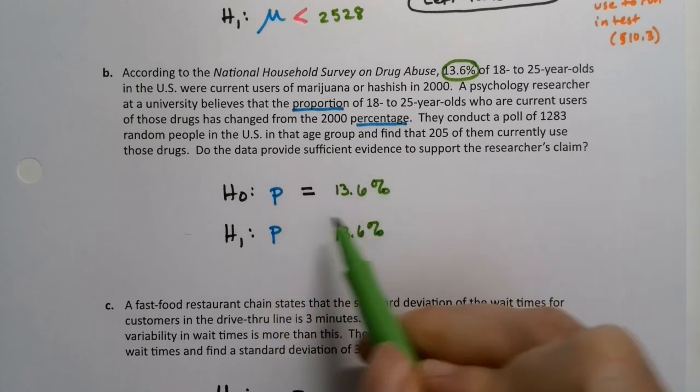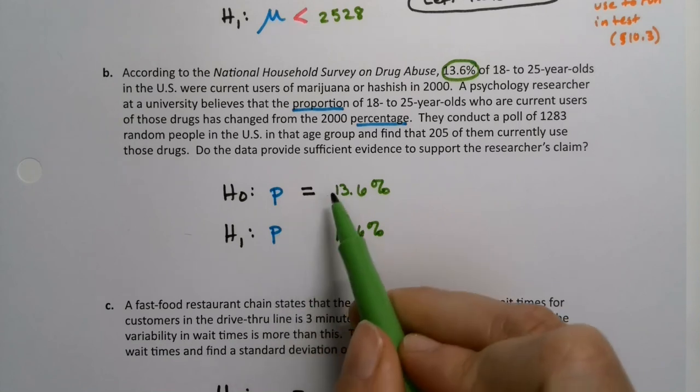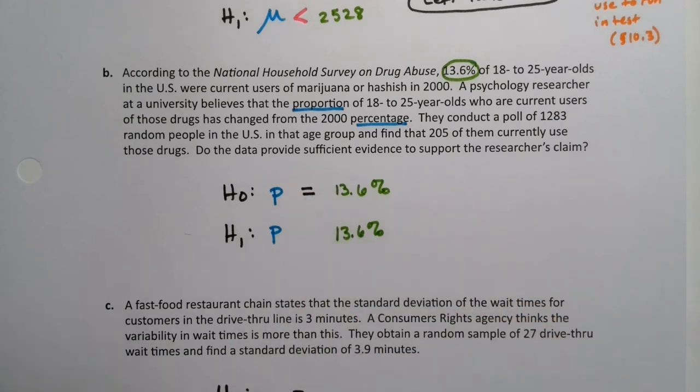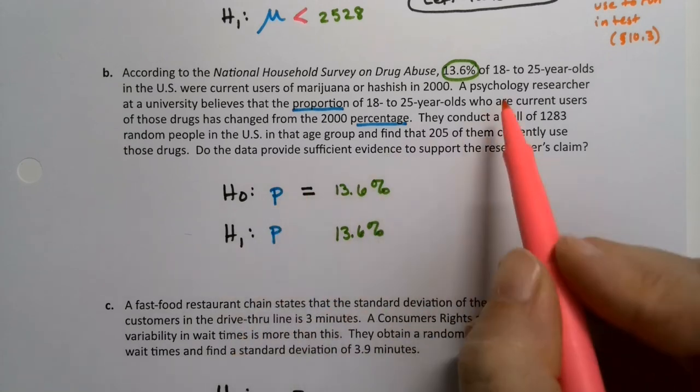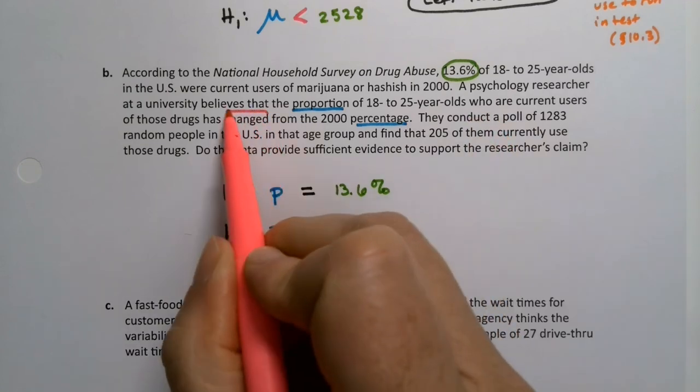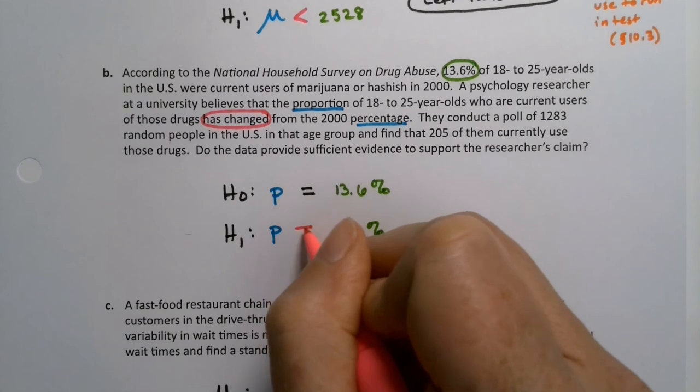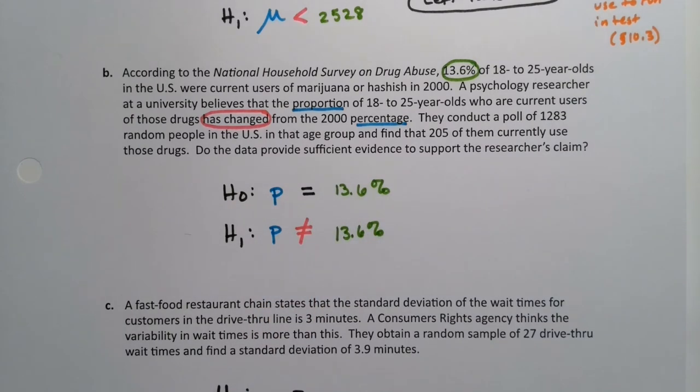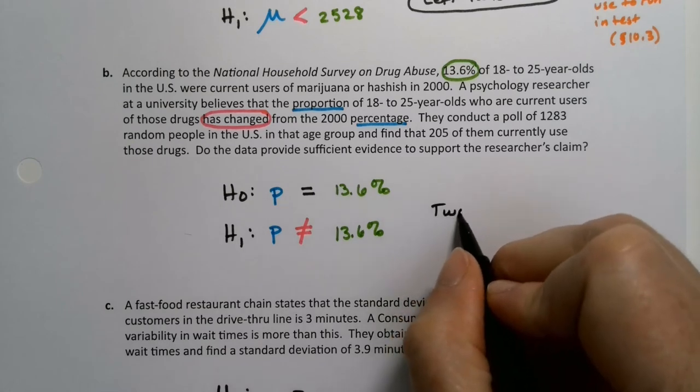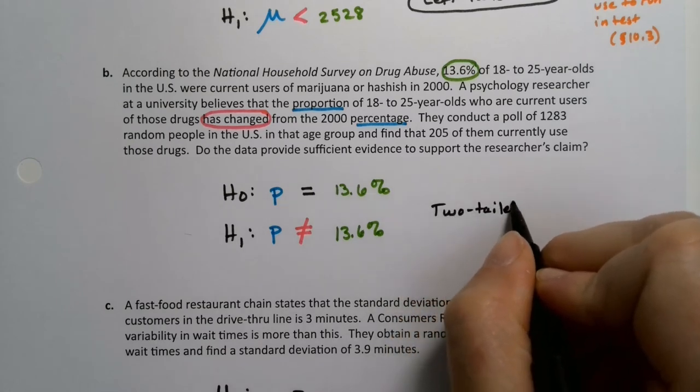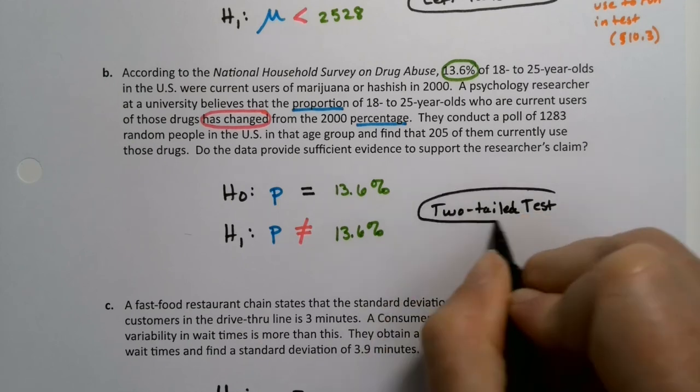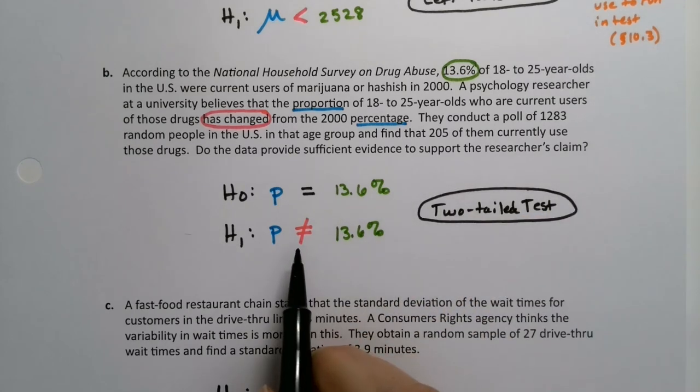And then that means that it has to be 13.6% here. It's always the same number and the same parameter for both. What changes is the sign. So for this one, what is the researcher claiming? The researcher claims that it has changed. See that? Changed. That's not equal to. All right. So this is a two-tailed test. It's both left and right simultaneously because we don't pick a direction. It's just not equal to. Could go either way.